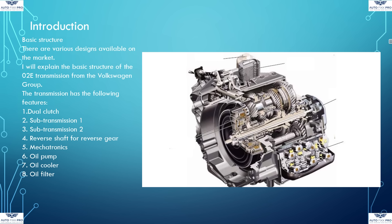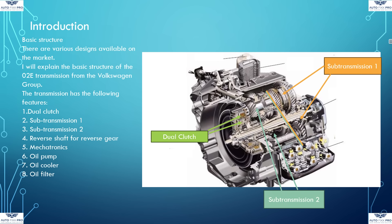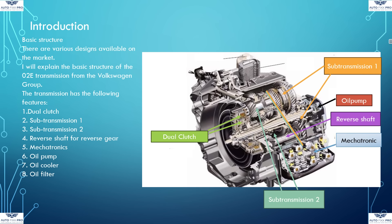The transmission, known as O2E, consists of the following main components and assemblies: the dual-clutch, sub-transmission 1, and sub-transmission 2, the reverse shaft for reverse gear, the mechatronics, and the oil supply, consisting of the oil pump, oil cooler, and oil filter.